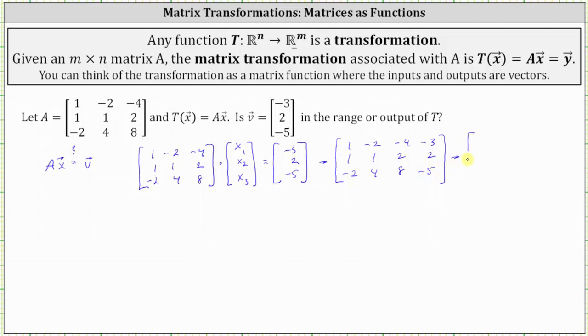Next, we write the augmented matrix in reduced row echelon form, which again I've already done to save time. Row one is one, zero, zero, zero. Row two is zero, one, two, zero. Third row is zero, zero, zero, one.